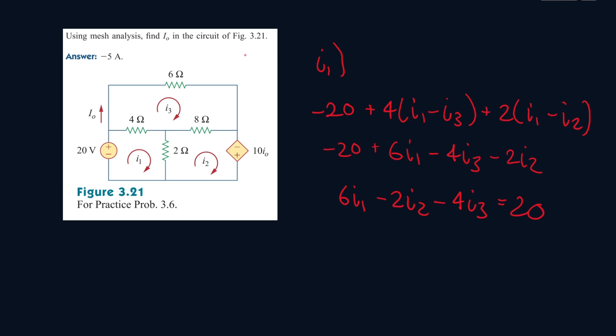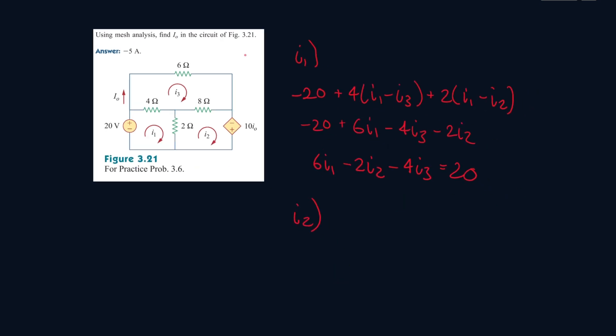First equation is done. Now let's work with I2. We see it's 2(I2 minus I1), plus 8(I2 minus I3), plus 10IO. No, sorry, minus 10IO.